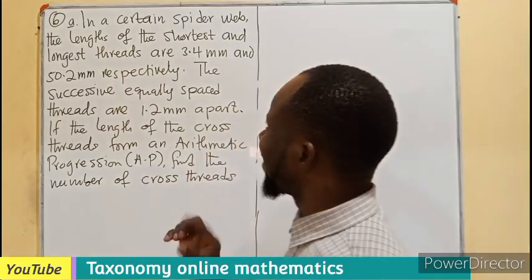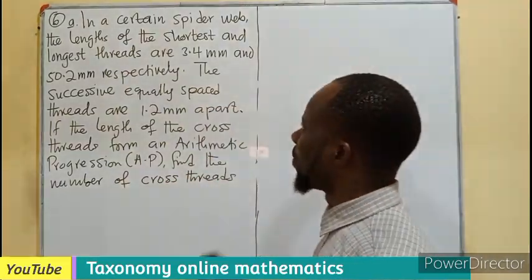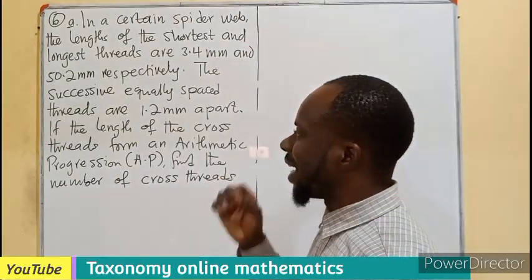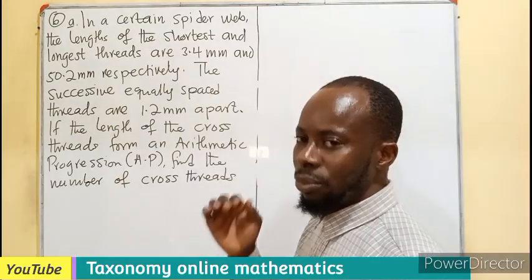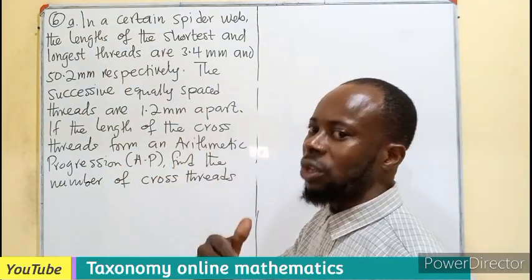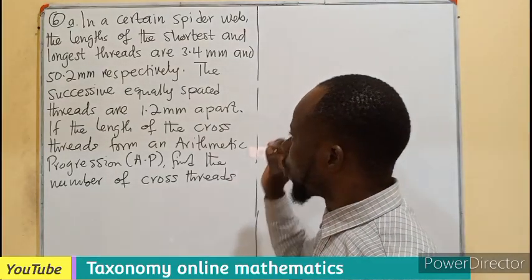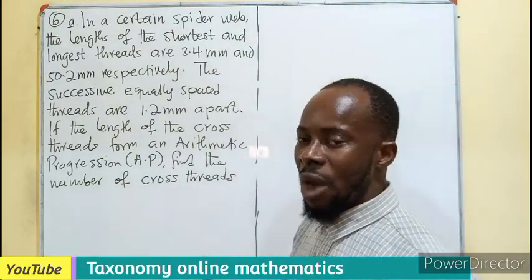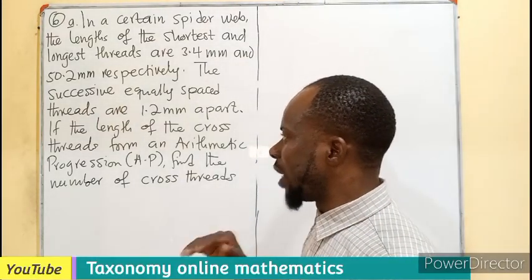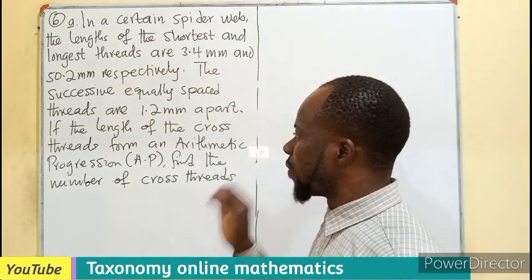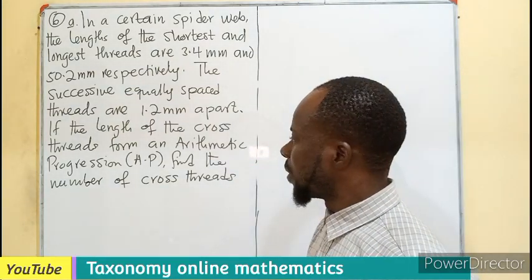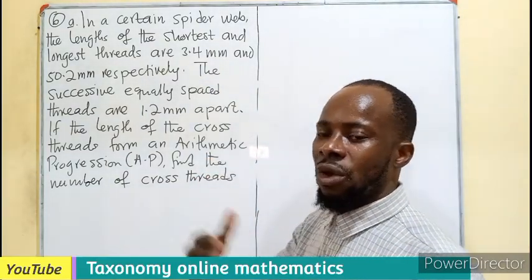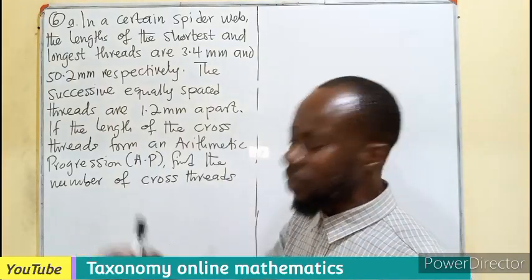In a certain spider web, the length of the shortest and longest thread are 3.4mm and 50.2mm respectively. The successive equally spaced threads are also 1.2mm apart. If the length of the cross thread forms an arithmetic progression, then we have to find the number of cross threads.